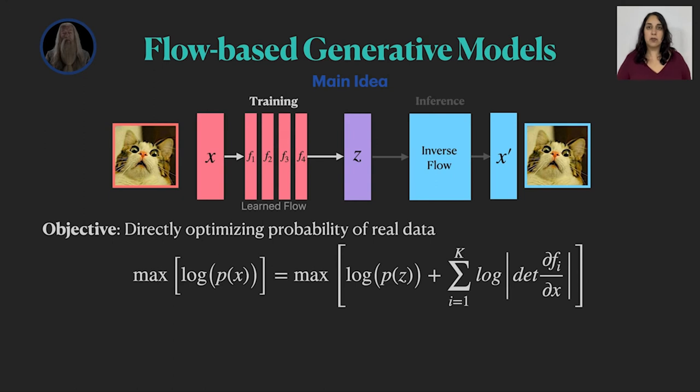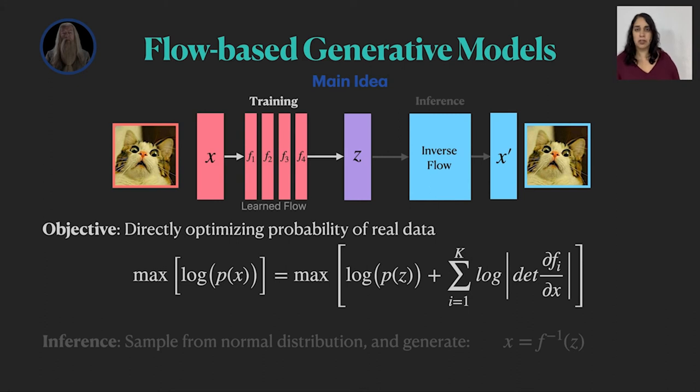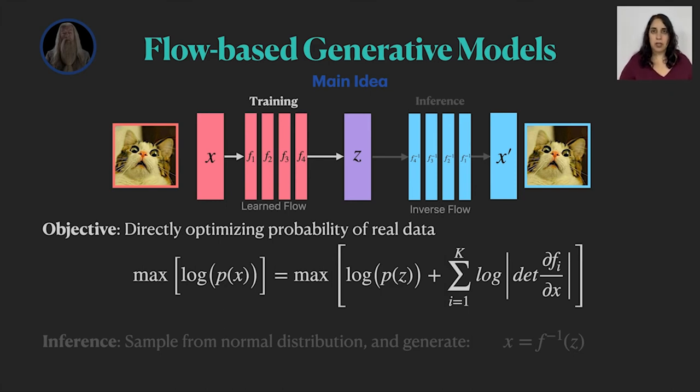In inference, we use the inverse flow to either reconstruct X from Z or just randomly sample Z from the normal distribution to generate new images. So the inverse flow is basically the inverse blocks being stacked together.